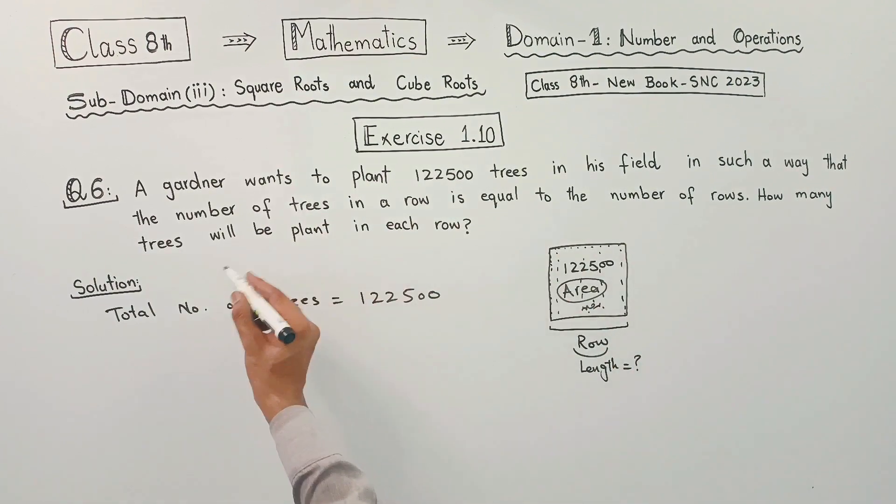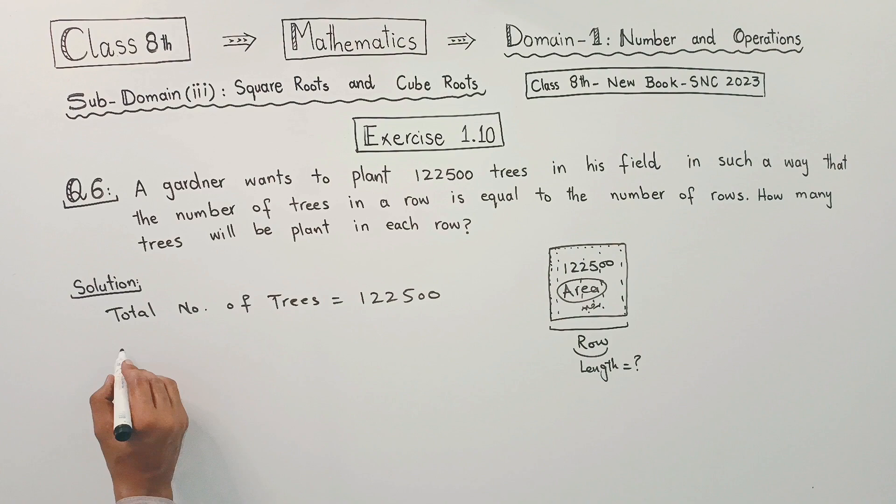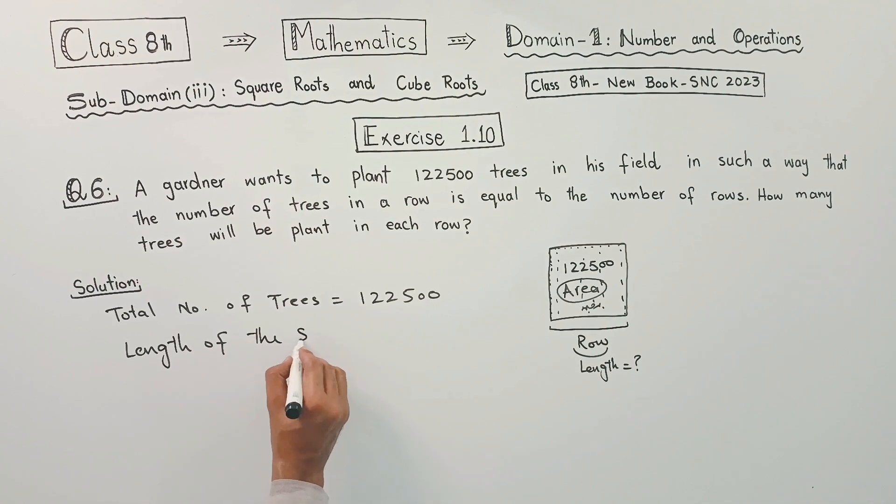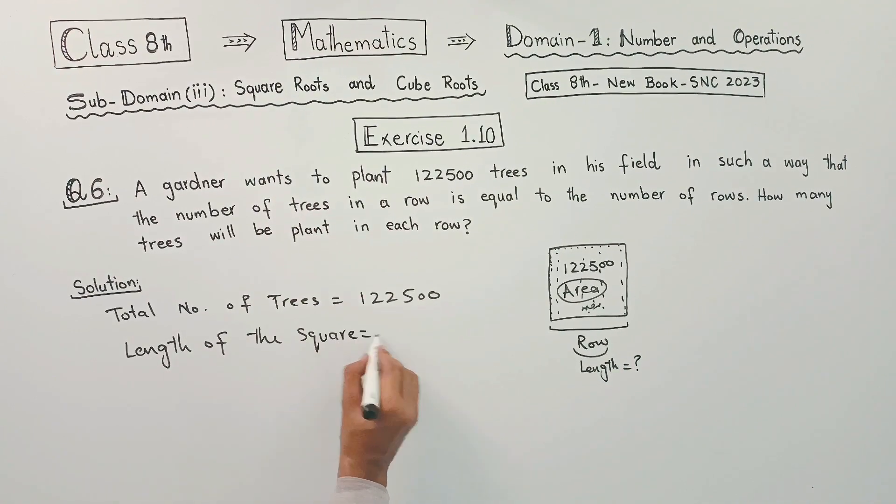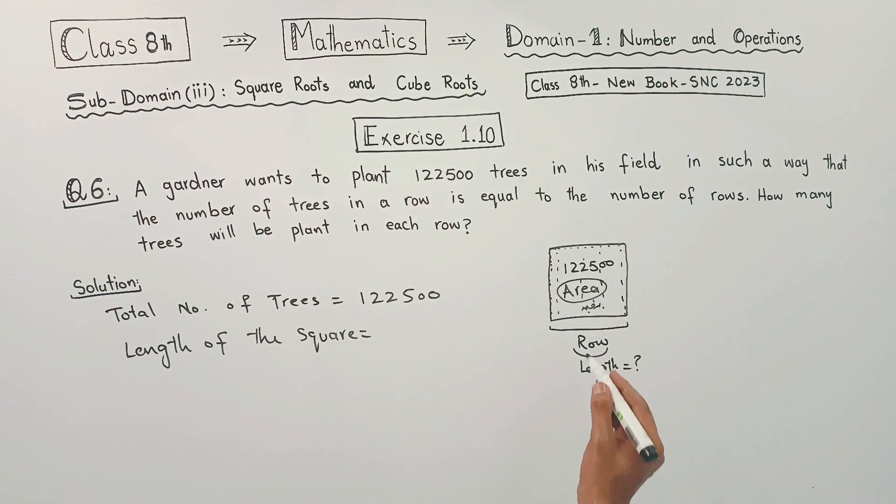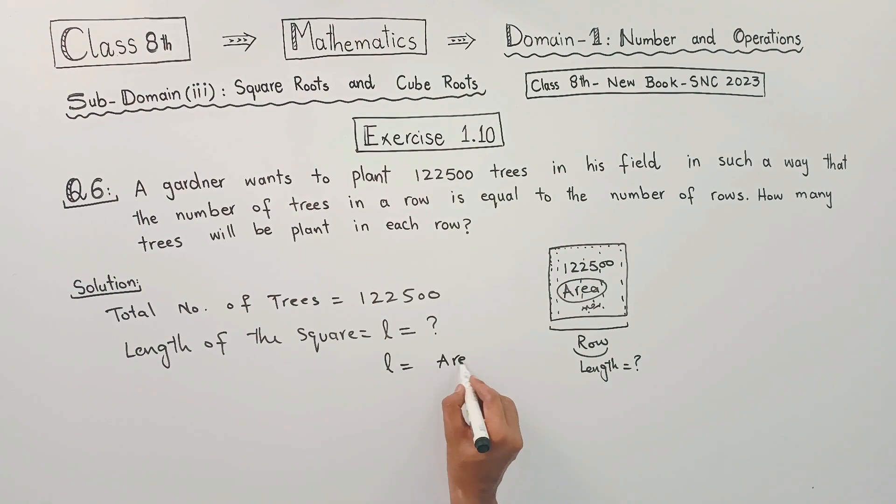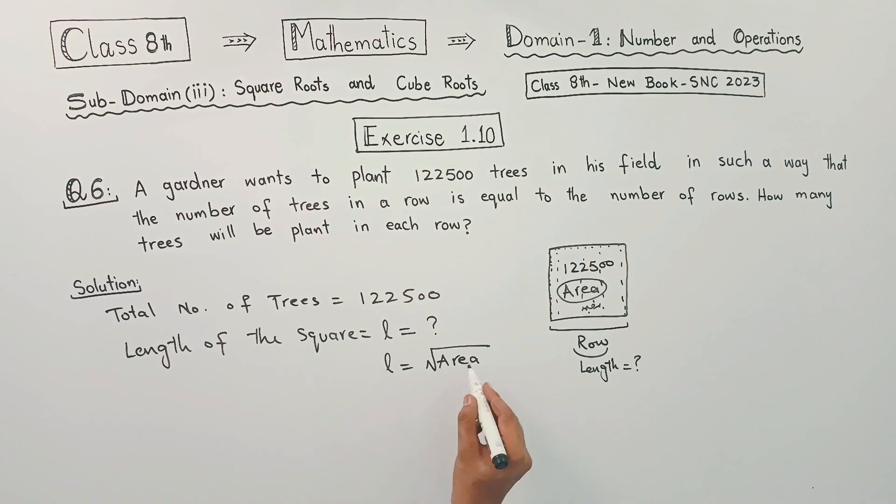We have to tell how many trees will be planted in each row. So we will find the length of the square. The square shape in which the trees are planted, we have to find the length. Length is equal to the square root of area, which is the length equal to square root of 1,22,500.